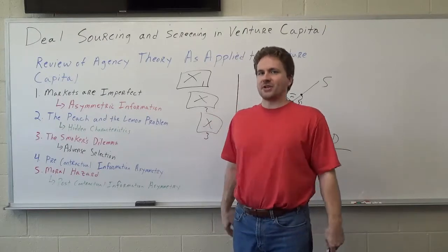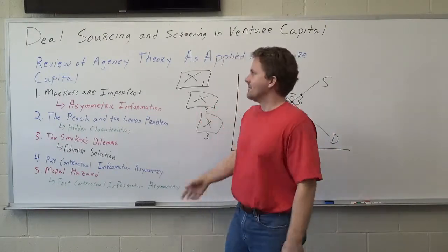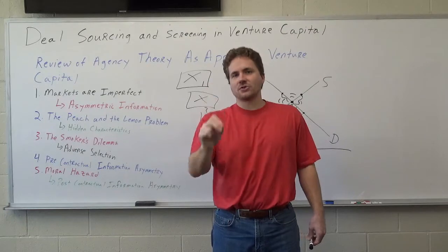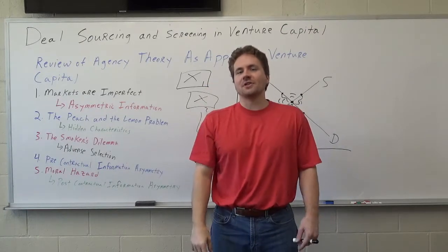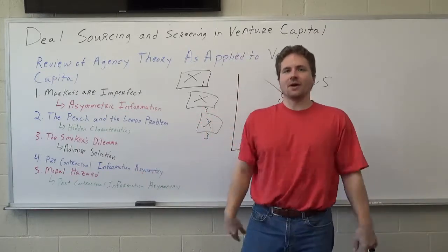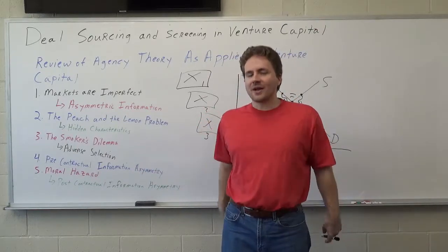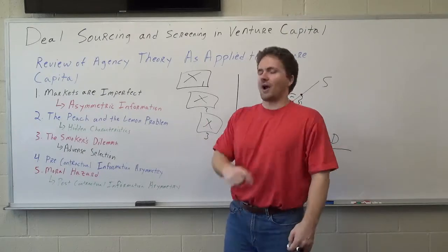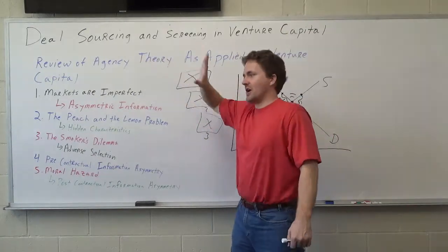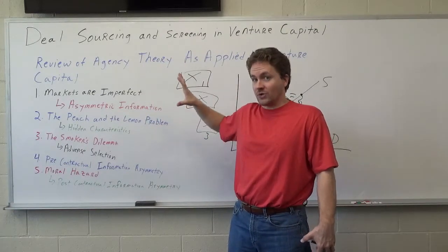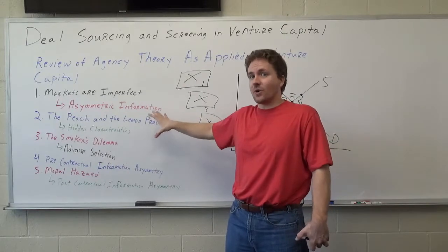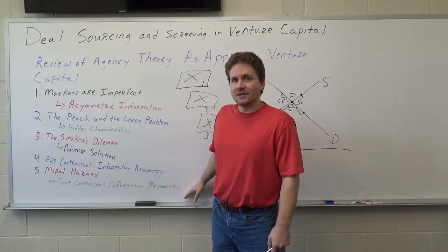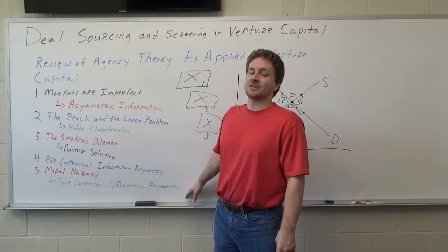We also have what we call post-contractual information asymmetry. The contract has been signed, but tying it back to agency theory, the entrepreneurs may do things that are in their interest and not in the interest of the venture capital firm or the limited partners — that's where we get into moral hazard. They may take the money and run, or go behind your back and write other contracts. So we've got to worry about both: do you have all the facts when doing your screening and analysis? And after the fact, are you able to monitor the firm to make sure they adhere to the terms of the agreement?